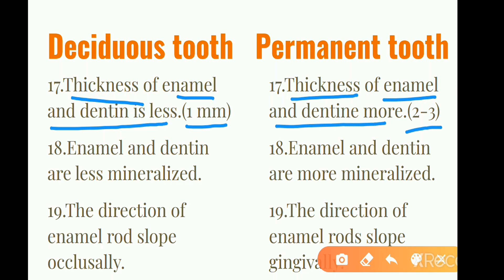In deciduous teeth, the enamel and dentin are less mineralized, because deciduous teeth erupt early in a child's life and cannot be fully mineralized at that stage. Permanent teeth remain in the oral cavity for a much longer time, allowing them to be well mineralized. Therefore, permanent teeth are more mineralized.